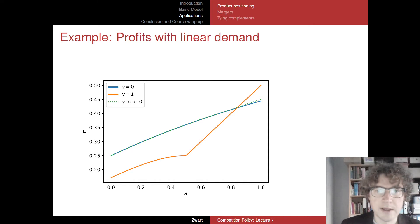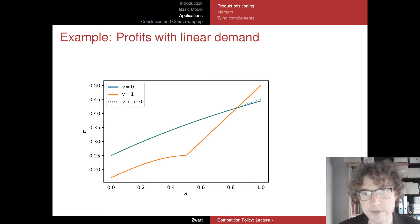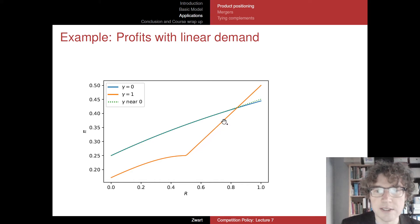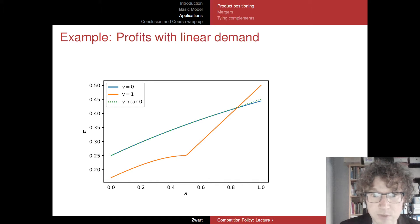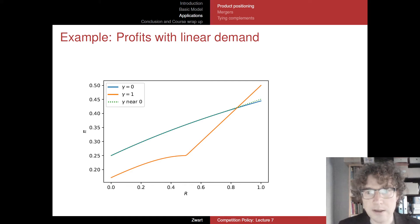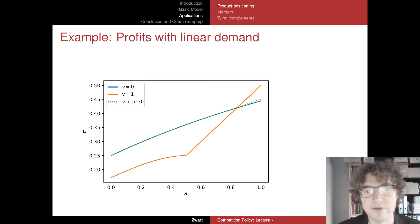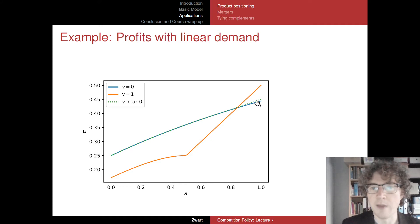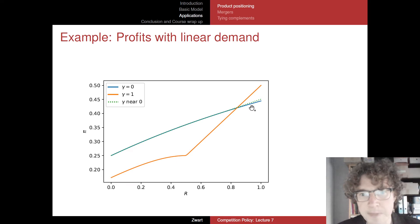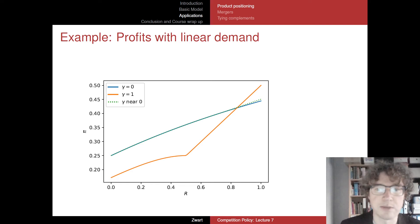The straight part of the curve corresponds to the situation where prices are driven down to marginal cost — zero in this case. Profits are essentially only the single-homing rents from advertisers. As R gets very large, those single-homing profits from advertisers outweigh all the monopoly profits from the multi-homers in the independent goods case, where not so many consumers are actually single-homing.